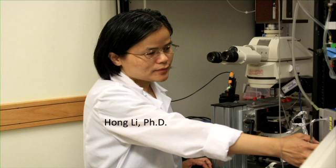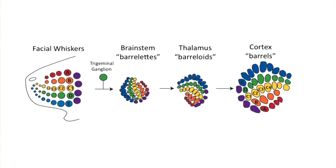So what did we do in this study? We eliminated thalamocortical neurotransmission by deleting glutamate neurotransmission from thalamocortical axons. The model system we used was the barrel cortex, which is a somatosensory system representation of the facial whiskers through the brainstem to the thalamus. Using Cre-lox technology, we conditionally deleted glutamate neurotransmission from thalamocortical axons so that they were silent.